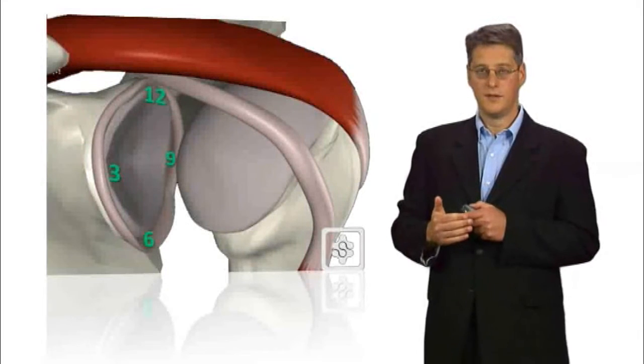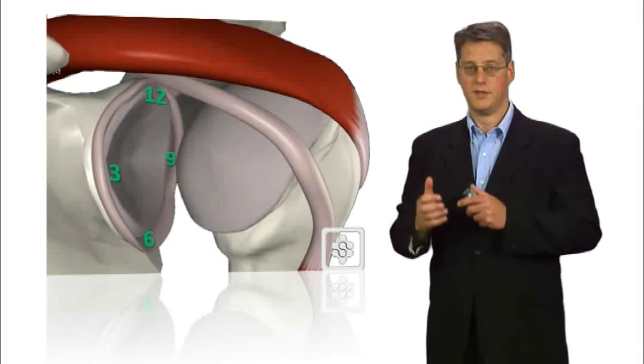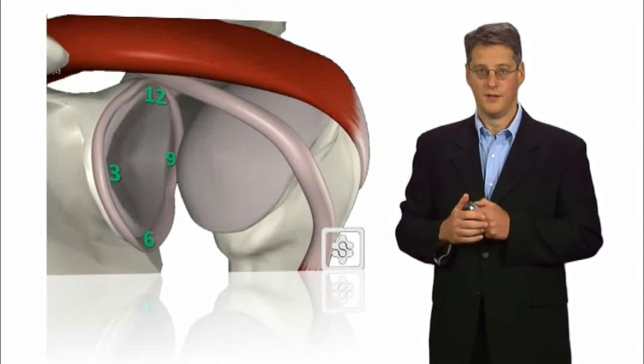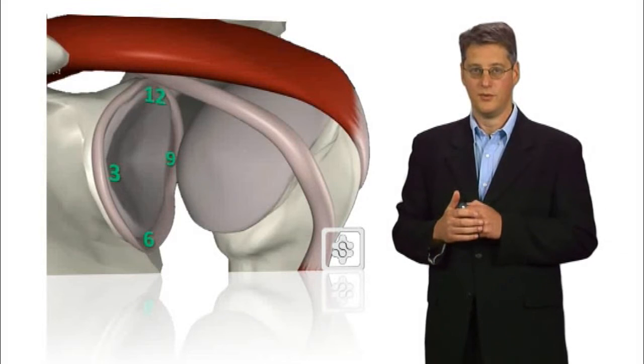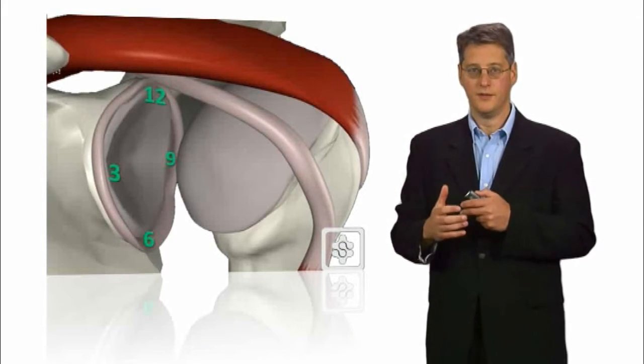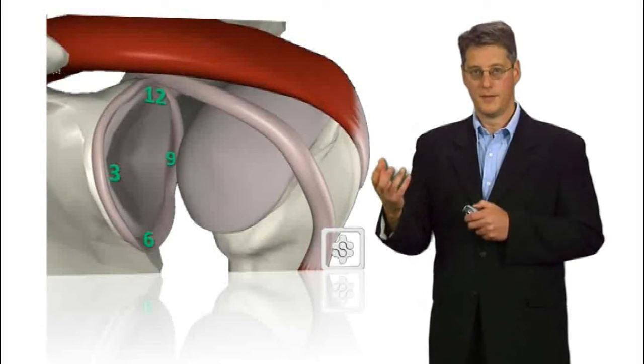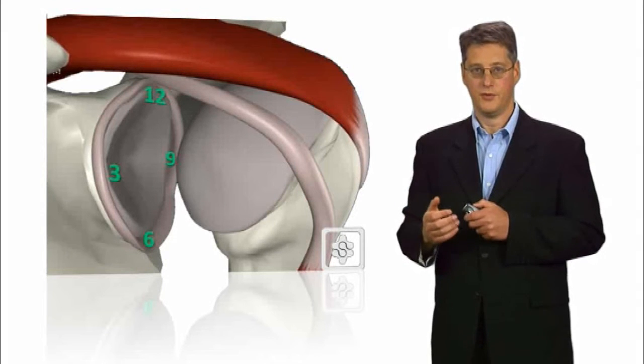Labral tears are typically associated with dislocations of the shoulder or even partial dislocations known as subluxations of the shoulder. The typical feelings are that of the joint feeling unstable, clicking and clunking and particularly pain from the joint.